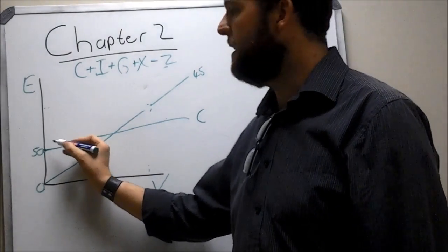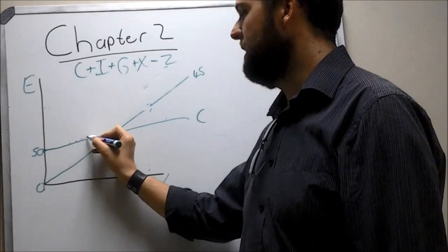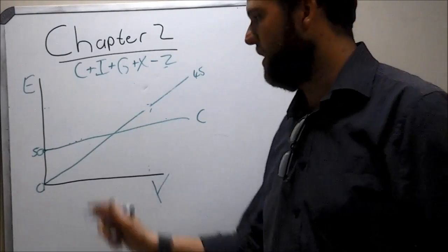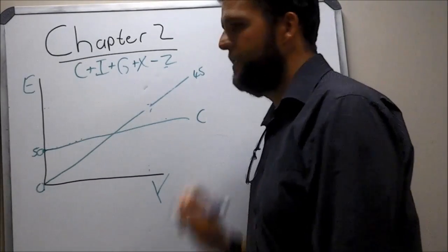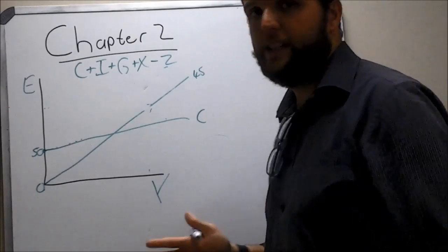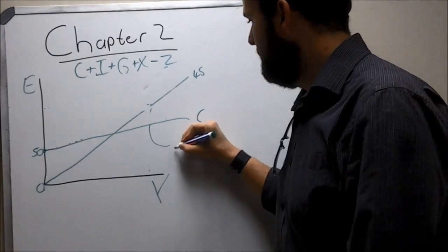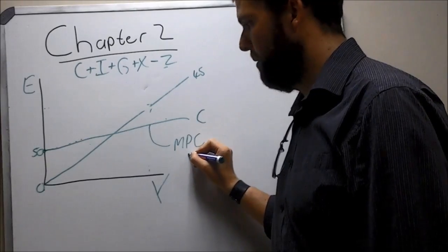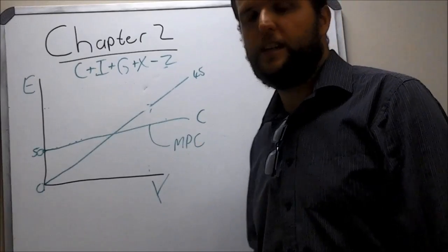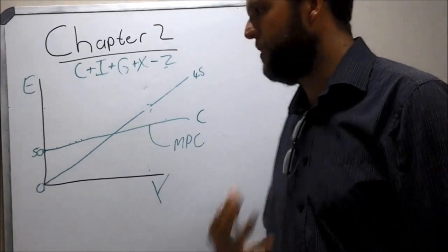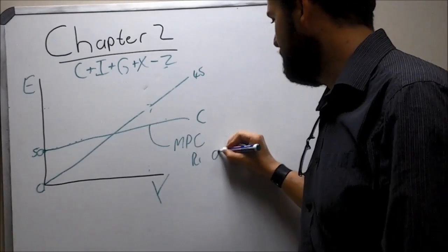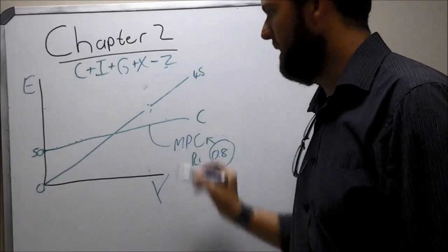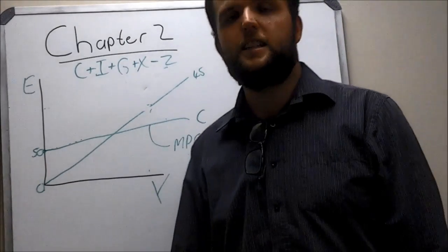This autonomous part is fixed. Then there's the induced part, which changes your consumption as soon as you get more income. The slope of this consumption line is the MPC — the marginal propensity to consume — which determines how much of our income will be consumed. For example, if you earn one rand and consume 0.8 rand, your MPC equals 0.8, and that is also the slope of the line.